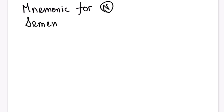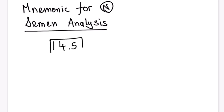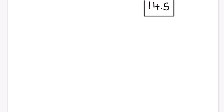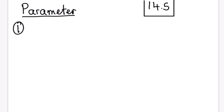We are going to see a mnemonic for normal semen analysis. There are many numbers in semen analysis which can be greatly confusing. The key number to memorize is 14.5 — you can remember it as 1+4=5, or as 1,2,3,4,5 with 2 and 3 struck off. All parameters of normal semen analysis will be derived from this number.